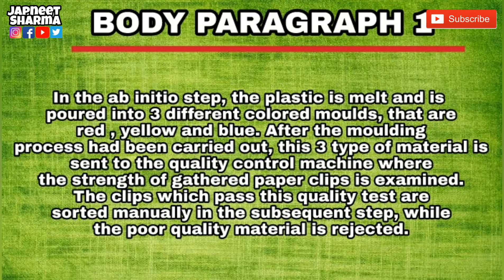Now let's move to the body paragraph. In the ab initial step the plastic is melted and poured into three different colored molds — that are red, yellow, and blue. After the molding process had been carried out, these three types of material are sent to the quality control machine where the strength of the gathered paperclips is examined. The clips which pass this quality test are sorted further. The substandard quality material is rejected. So this is our first body paragraph.